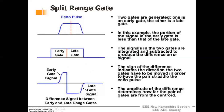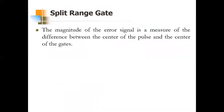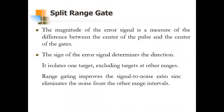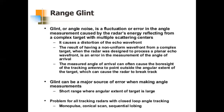To summarize split gate tracking: the sign of the error signal determines the direction the gates must move. It isolates one target, excluding all others, and hence improves the SNR by eliminating noise from other range intervals. This completes the first topic of tracking in range — split gate tracking.